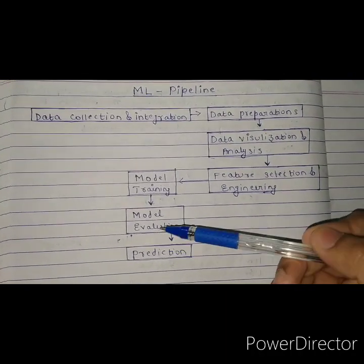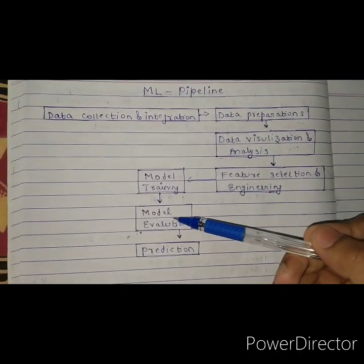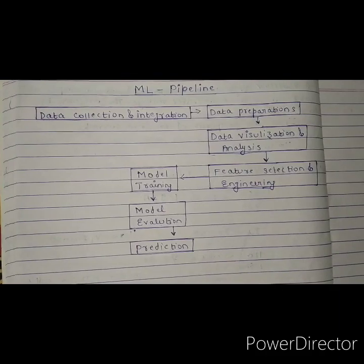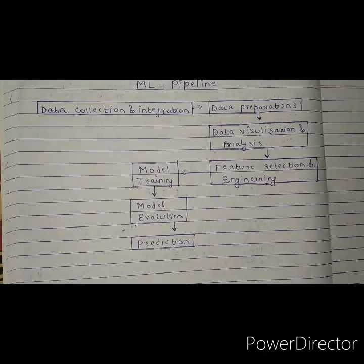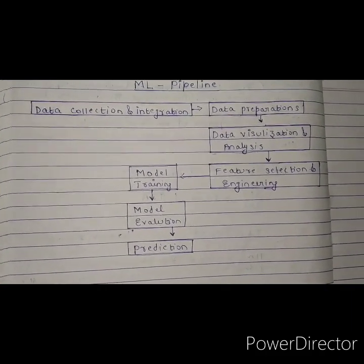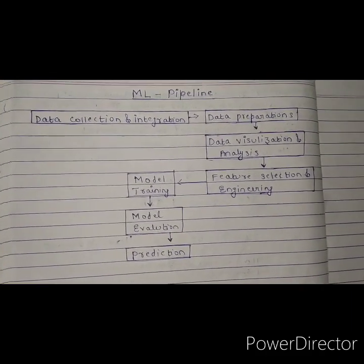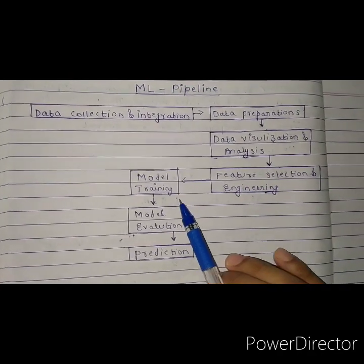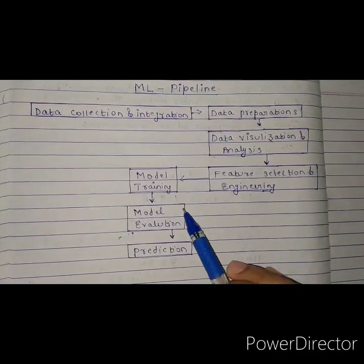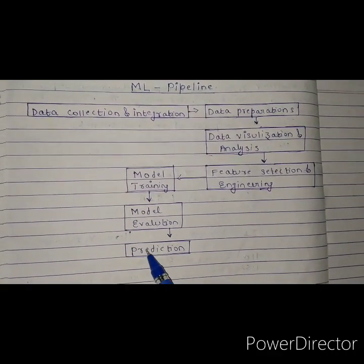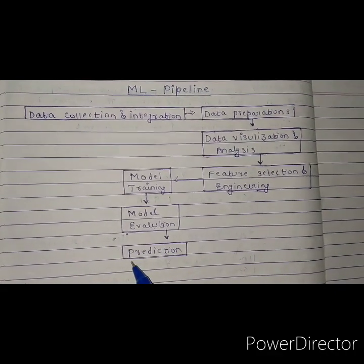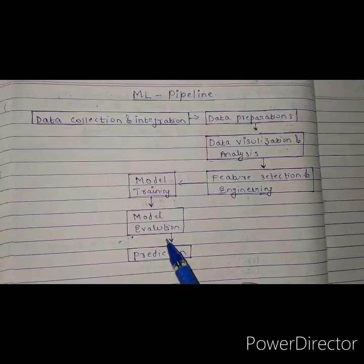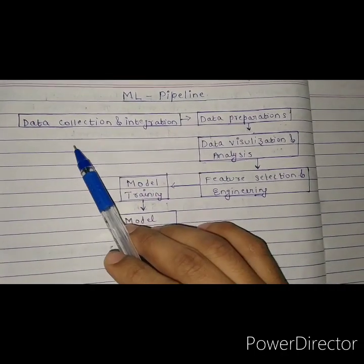जब model train हो जाए तो उसे evaluate करें — output को check करें कि आपने क्या expect किया था और actual output क्या आ रहा है। फिर आपको predict करना है कि क्या data था और क्या prediction आ रही है। यह final और last step है।